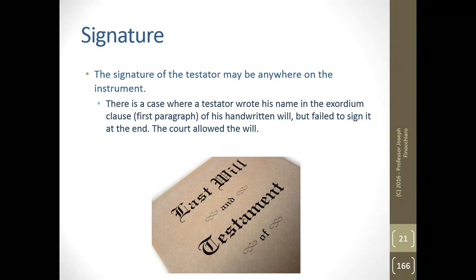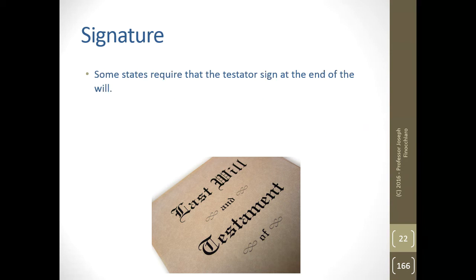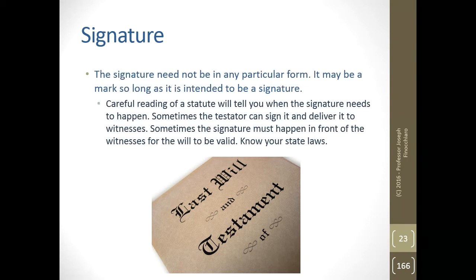Where does the testator sign? Anywhere — but as you can imagine, that can lead to problems. There is a case where a testator wrote his name in the exordium clause, the first paragraph of a will, but failed to sign it at the end, and the court said it was okay. Some states require the testator to sign at the end of the will — at least if the signature is on the last page, we can infer the individual consented to the previous pages.